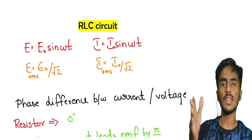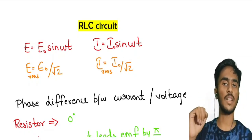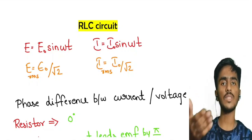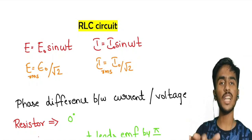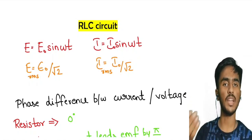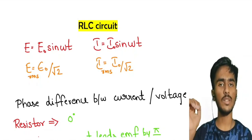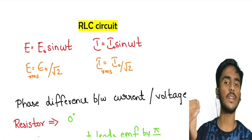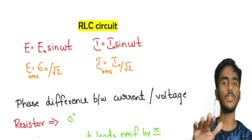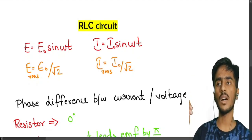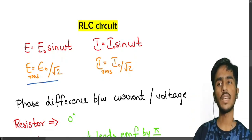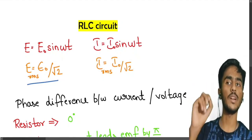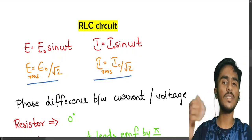In the alternating current chapter, we work with three circuit elements: the resistor, the inductor, and the capacitor. When we first look at the RLC circuit, we can derive formulas for individual circuits more easily. The AC equations are: e equals e0 sin(ωt), and i equals i0 sin(ωt). If you want the RMS value, E RMS equals e0 divided by root 2, and I RMS equals i0 divided by root 2.